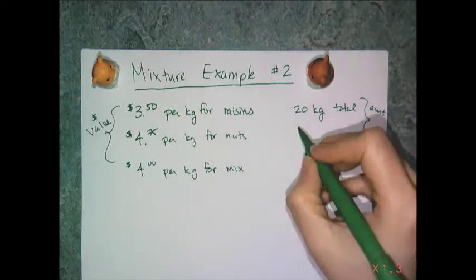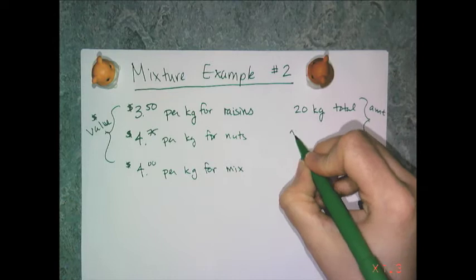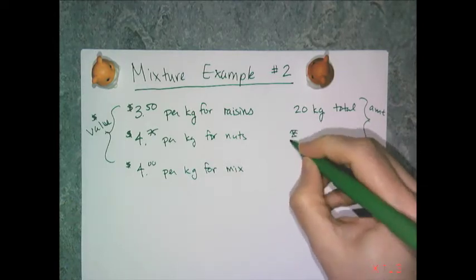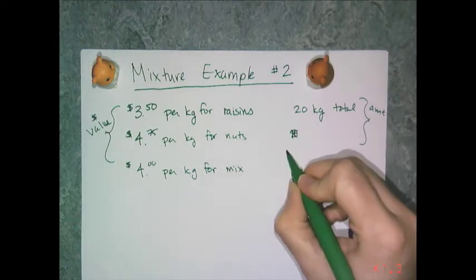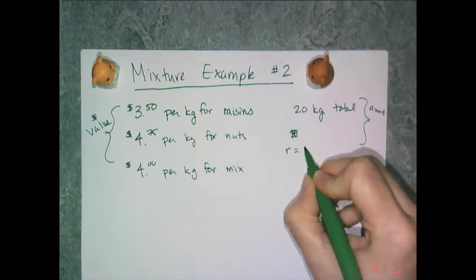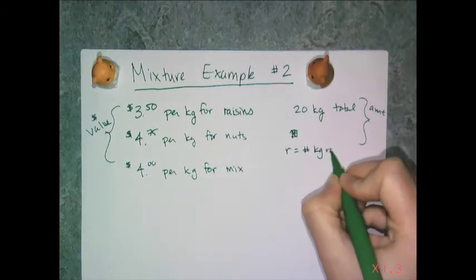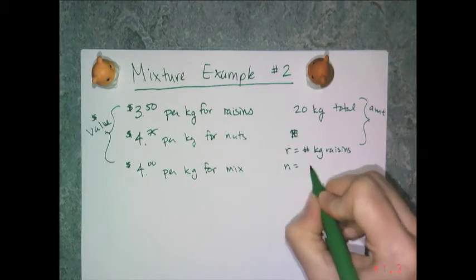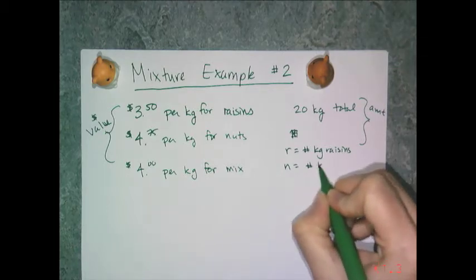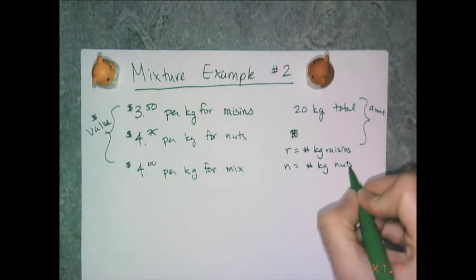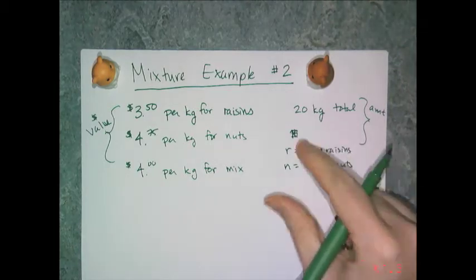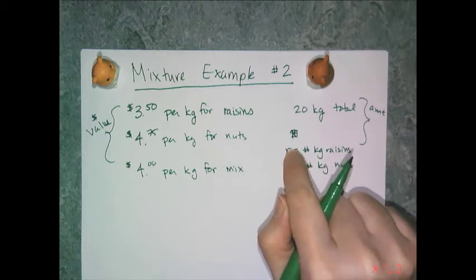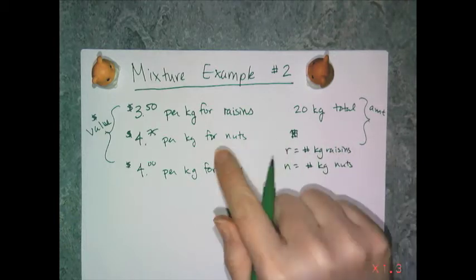Let's go ahead and define our variables. I'm going to use letters that make sense to the problem. So r equals the number of kilograms of raisins, and n equals the number of kilograms of nuts. It's better if you pick letters that go back to the problem.